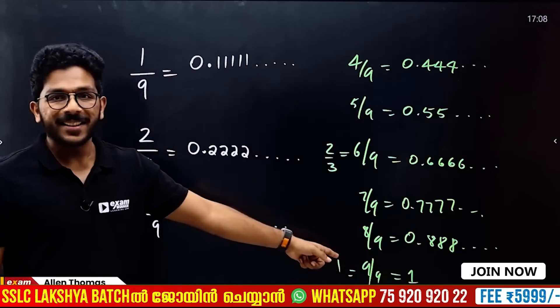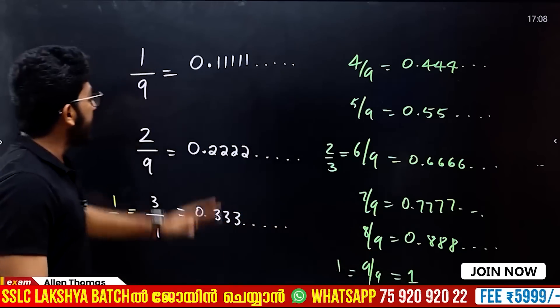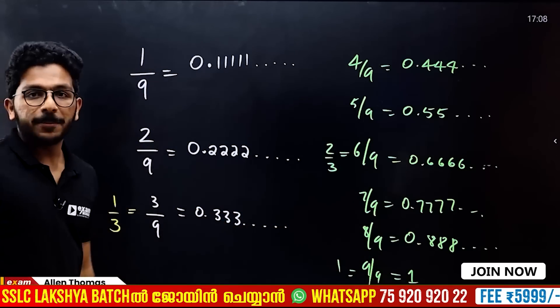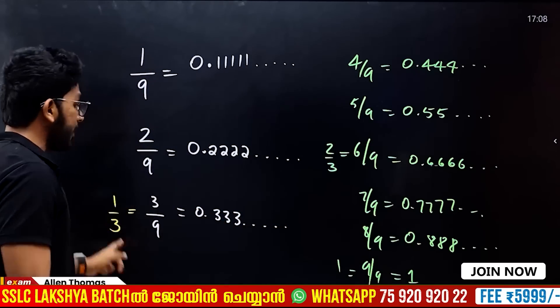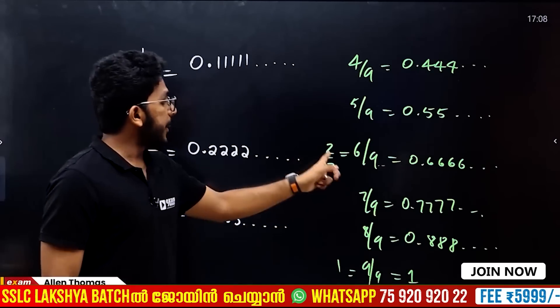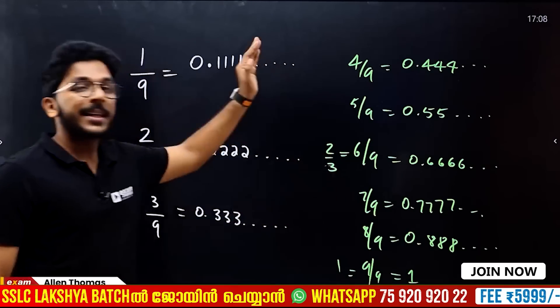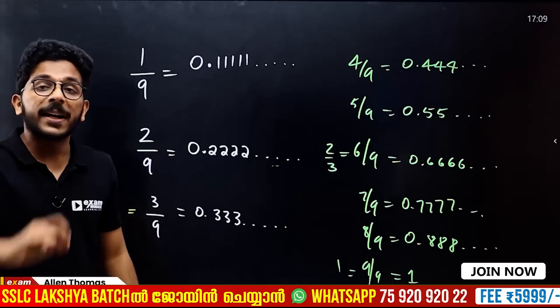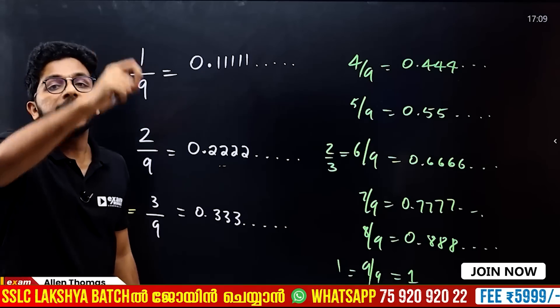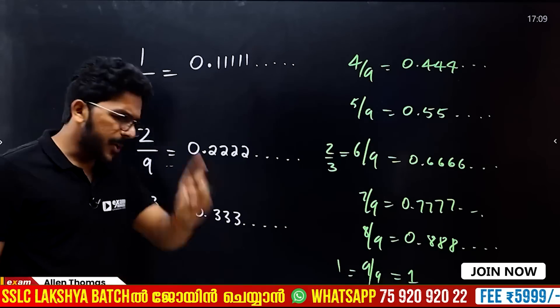0.9999 is equal to 1. This is very important. To find the decimal, divide the numerator by 9, and you get the repeating decimal pattern.